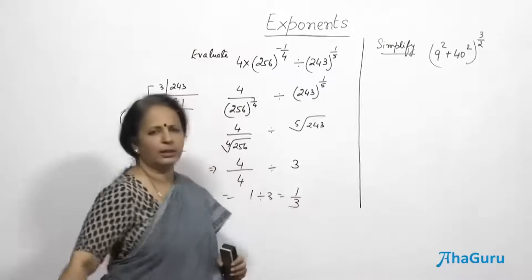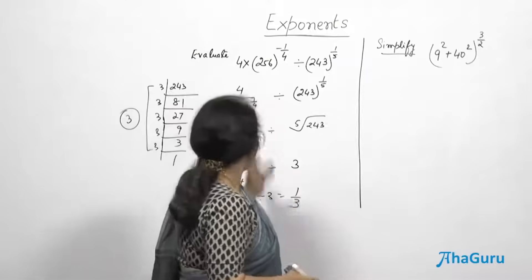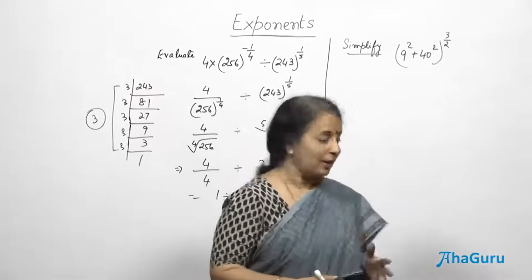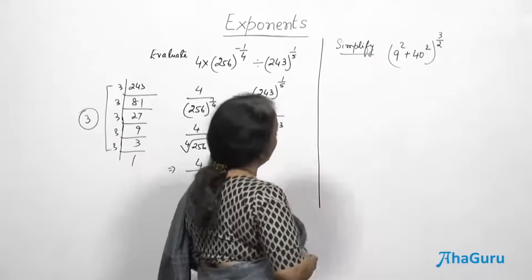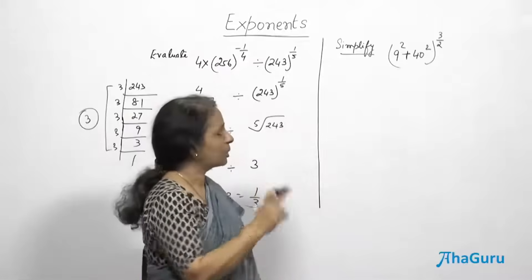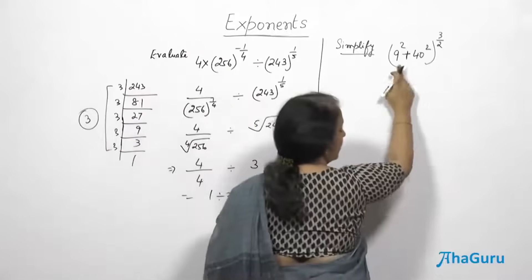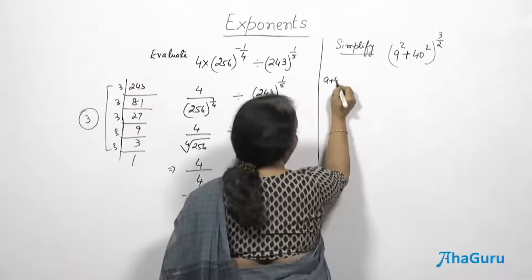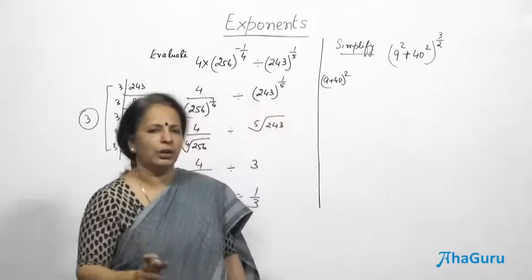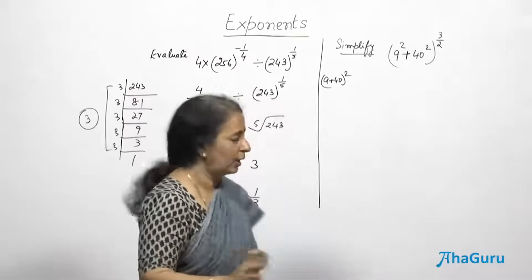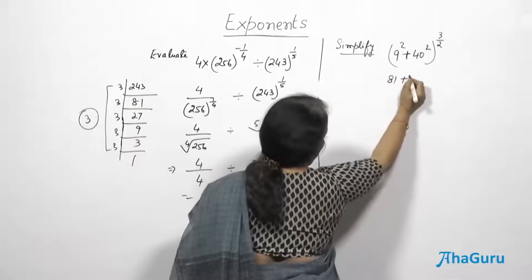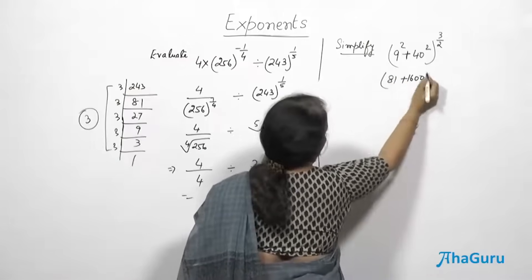Now for the next problem — the answer may not be found so easily, so the question asks for simplification. There is a plus sign here, meaning you do each square separately. Do not think it is (9 + 40) to the power 2 — that is wrong. It is 9² + 40², which are done separately: 9² = 81 and 40² = 1600.